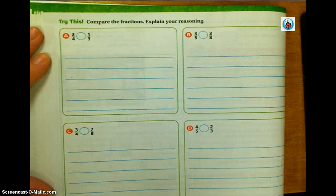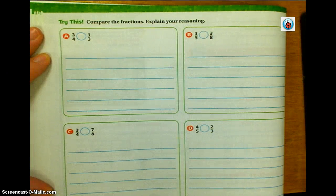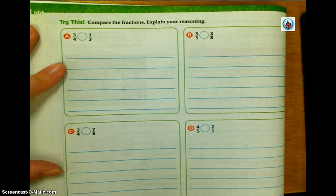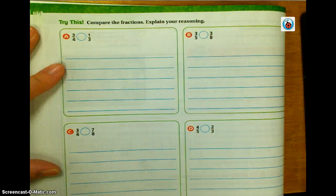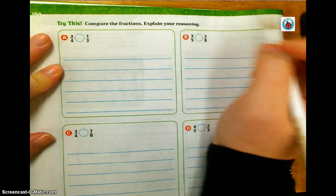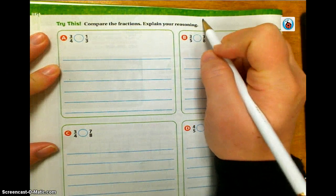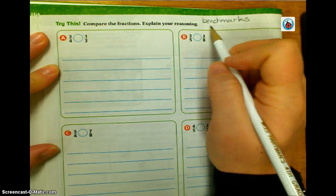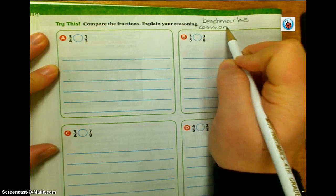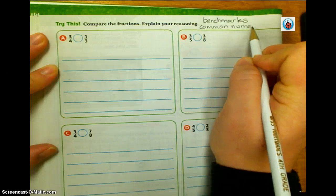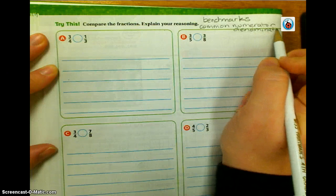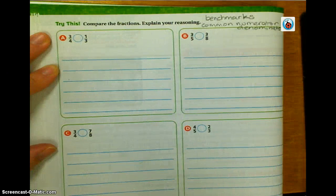Now we're going to work on page 366, and they have four problems for us to try: A, B, C, and D. It says compare the fractions and explain your reasoning. In this lesson, you learned how to compare fractions using common numerators or common denominators. In the previous lesson, you learned how to compare fractions using benchmark numbers. So I really have three choices: benchmarks, common numerator, or common denominator.